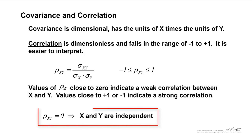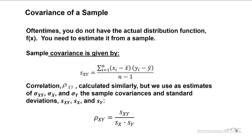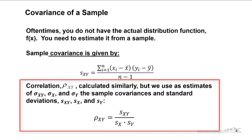If the correlation is close to 0, then x and y can be concluded to be independent. For samples, correlation is calculated similarly, but we use as estimates of sigma_xy, sigma_x, and sigma_y the sample covariances and standard deviations. So we take s_xy, the sample standard deviation of x, and the sample standard deviation of y, and compute the correlation that way.